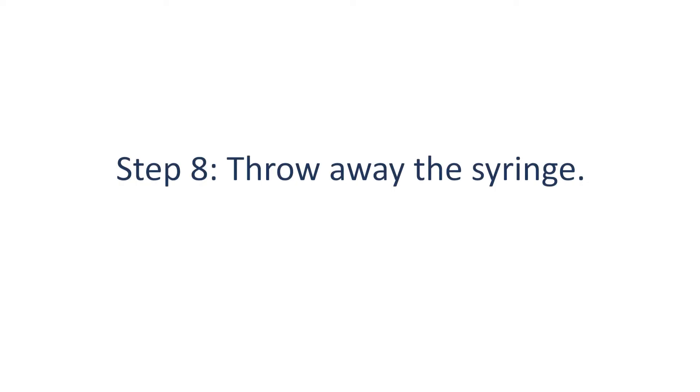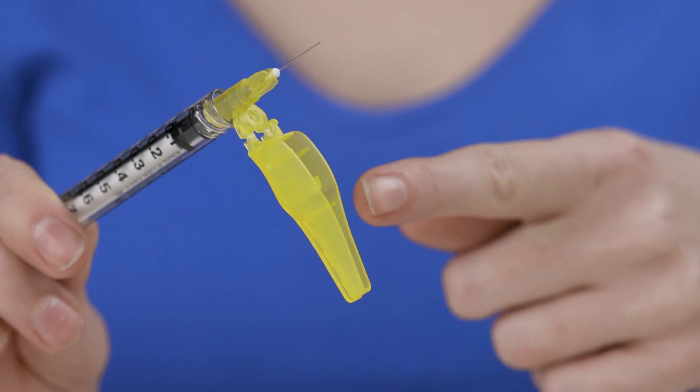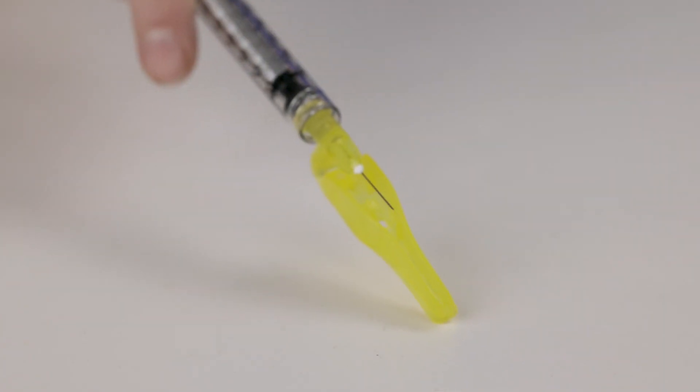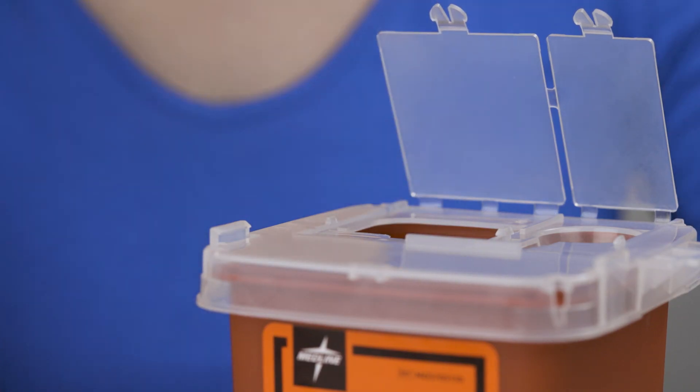Step eight, throw away the syringe. If the needle you are using has a safety feature that covers the needle after injection, activate the safety feature before putting the syringe into the sharps container. Throw away the syringe in a needle box or sharps container.